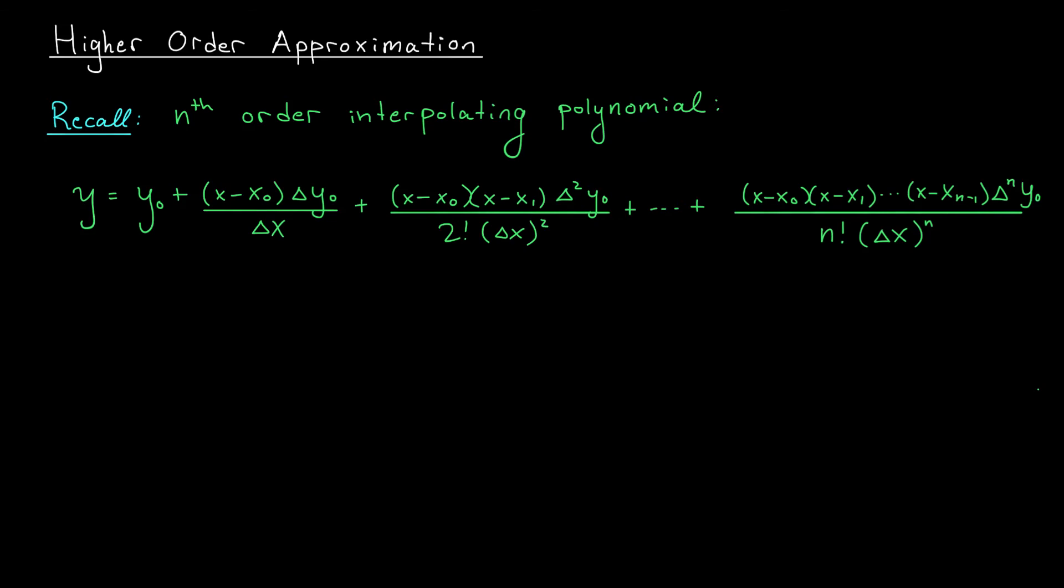Those points, x_0, x_1, all the way up to x_n, we'll assume that they're evenly spaced out on the x-axis with a distance of Δx between them. Now the question becomes, what happens to our polynomial as we let that Δx term go to zero? Well, if the distance between the points, Δx, is getting smaller and smaller and smaller,